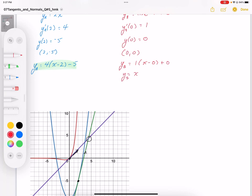Now to find the intersection point, that point right here, we make these two equations equal to each other. So I get 4x minus 2 minus 5 is equal to x. That'll solve for the x value.